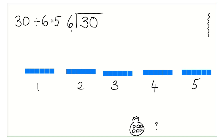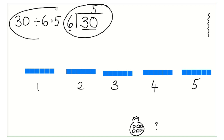Thirty divided into sixes gives me five, and I put it in the ones column. There we go — just two different ways to write down what we know, and how to count up in sixes to get our groups.